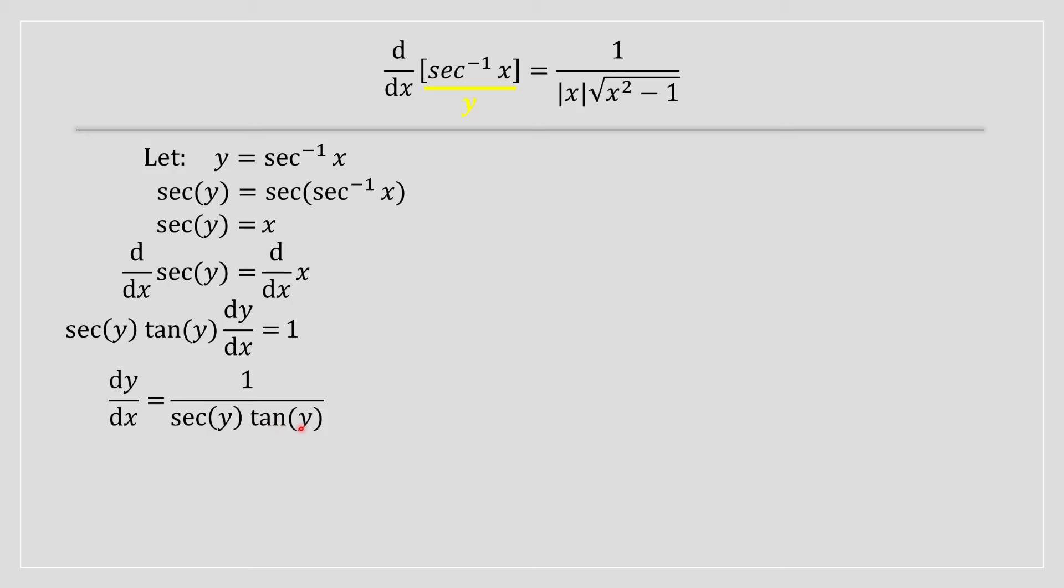At this point, we have a tan y, which we are going to replace using a trig identity. We're going to have square root of secant squared of y minus one, and we're going to replace that where you see the tan y. We can rewrite the expression as shown on your screen.